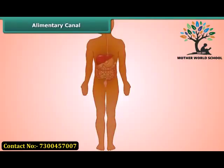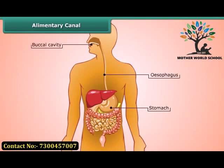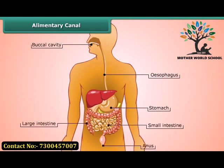You will be surprised to know that the food inside our body passes through an alimentary canal, or simply the digestive tract. It consists of the buccal cavity, food pipe or esophagus, stomach, small intestine, large intestine, and the anus. Now let us know what happens to the food in the different parts of the digestive tract.